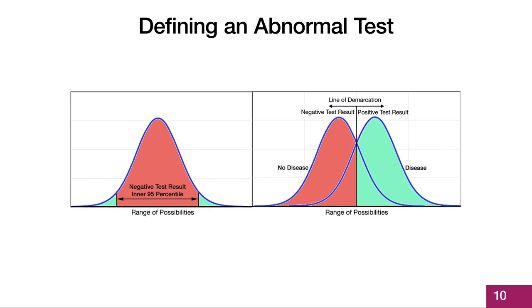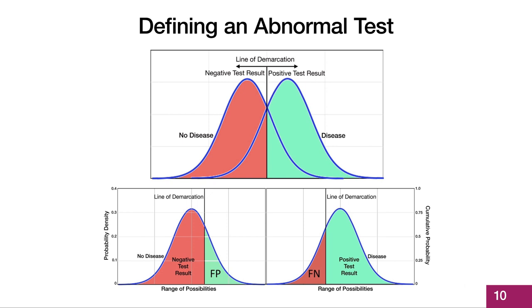We can then draw a line of demarcation that partitions the test results into those we define as normal on the left, shown in red, and those we define as abnormal to the right, shown in green. The line of demarcation identifies patients with truly negative test results, shown in red on the left, but also creates false positive test results, shown in green. Likewise, on the right, the line of demarcation identifies patients with truly positive test results, shown in green, but also creates false negative test results, shown in red.